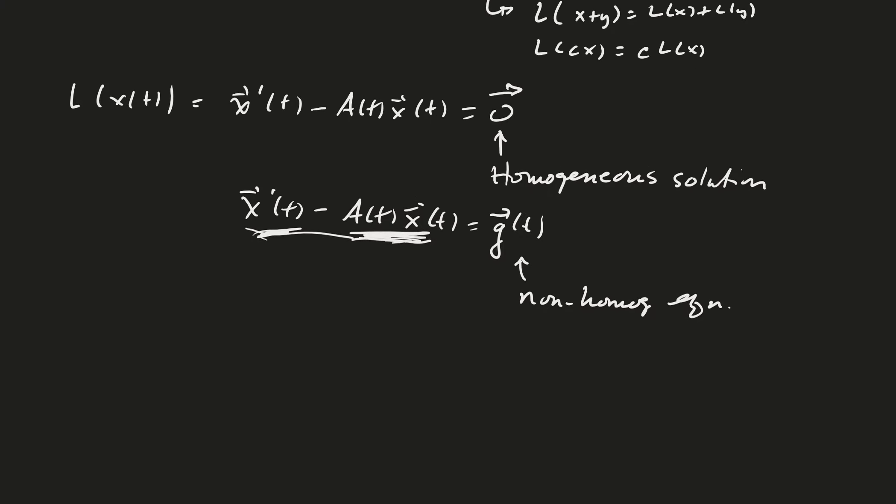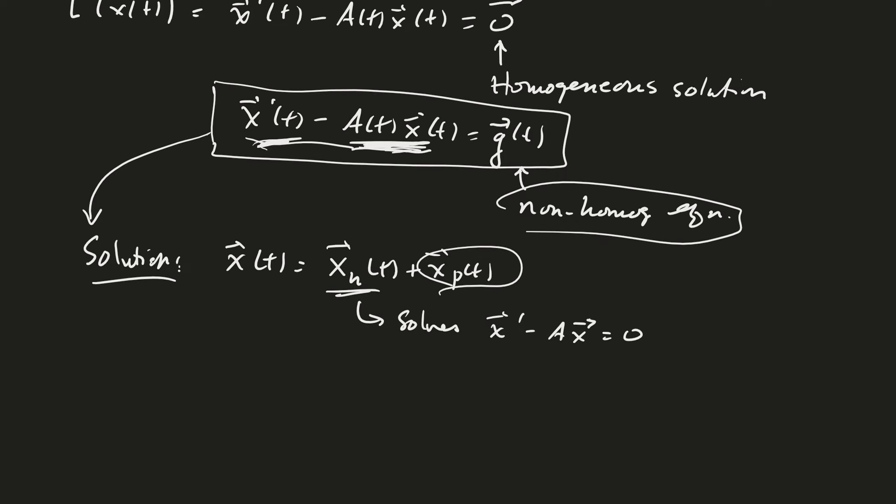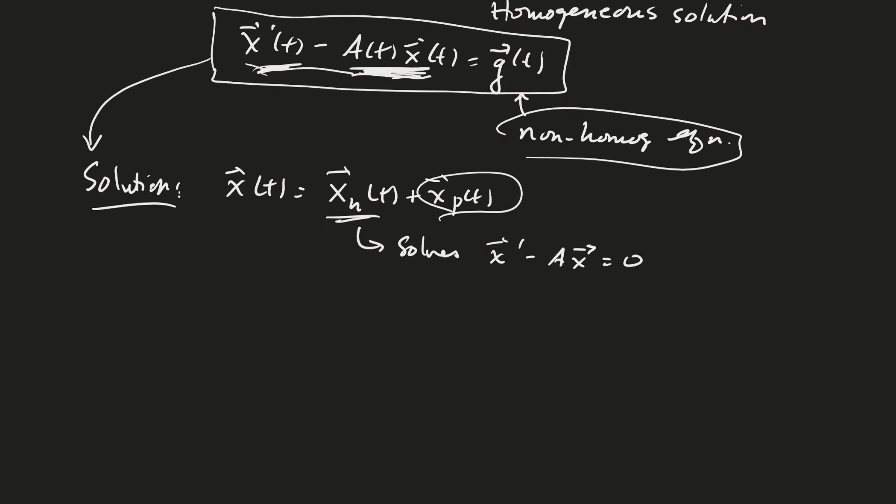So then if we're trying to solve the non-homogeneous equation, do you remember how to do that? The solution to that equation is always broken up into the homogeneous part plus the particular part, where the homogeneous part solves the homogeneous equation. We're not going to talk about the non-homogeneous part of the equation or non-homogeneous equation, but this is just some theory that we looked at before.